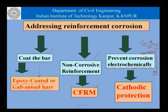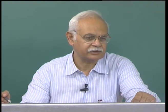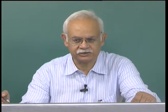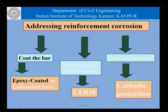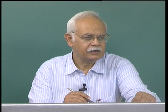As far as electrochemical methods for preventing corrosion are concerned, we could consider cathodic protection. Cathodic protection is a standard tool for steel structures or pipelines. Its application in the case of concrete structures is rather limited. Our discussion today would be focused on the use of epoxy coated bars as one of the methods for prevention of corrosion in reinforcing steel.